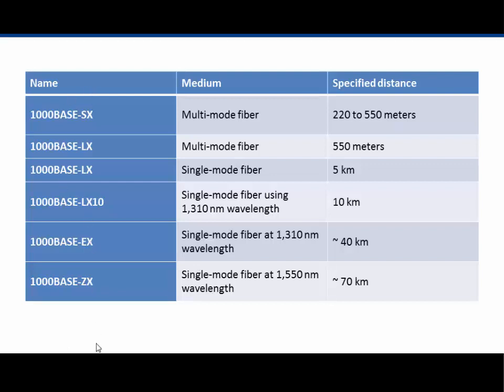Here are the standards for fiber optic cabling. 1000BaseZX is single-mode fiber, which can run up to 70 kilometers. 1000BaseSX is short wavelength multi-mode fiber, running 220 to 550 meters. 1000BaseLX is long wavelength multi-mode fiber, running 550 meters. Multi-mode fiber cable generally uses an orange color, and single-mode fiber uses yellow. In a networking closet, a yellow cable from a switch is likely single-mode fiber running 10 gigabit per second; an orange cable is likely multi-mode running gigabit speeds.